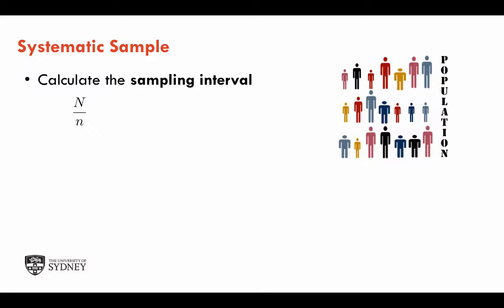An important concept associated with systematic sampling is the sampling interval. The sampling interval is just the period on which we sample the individuals, and it's given by the size of the population, capital N, divided by small n, the sample size. In this case, if the population is 21, as indicated in the figure, and we want a sample of size 7, our sampling interval is 3.